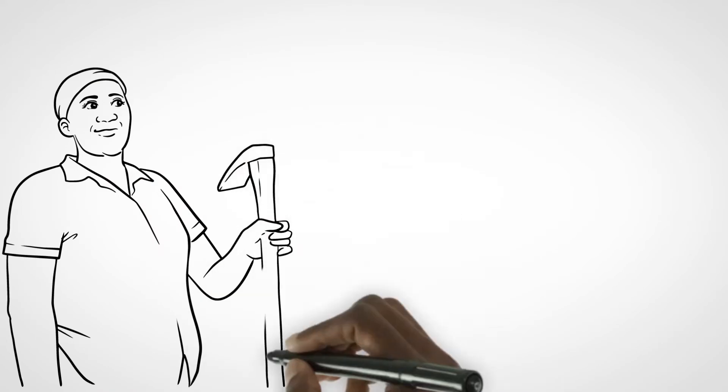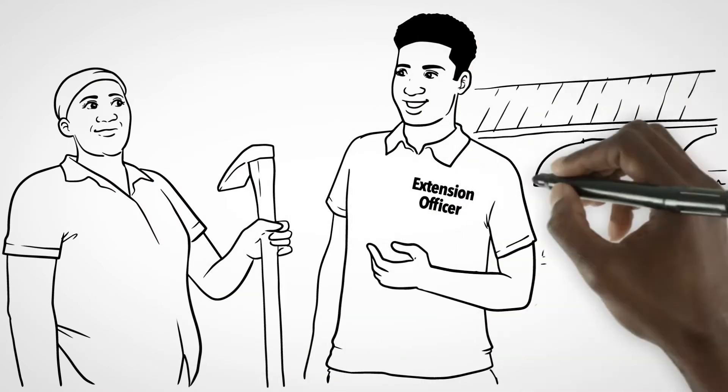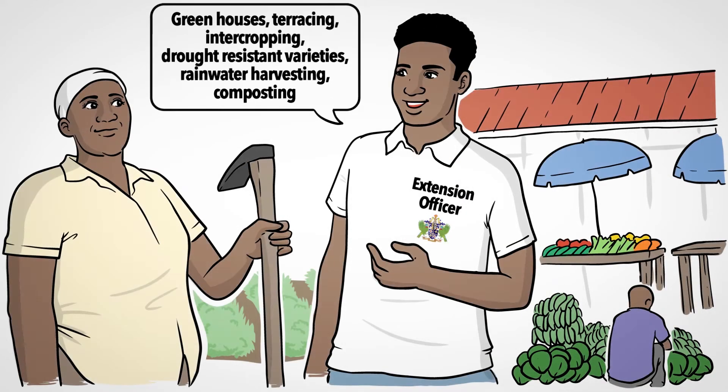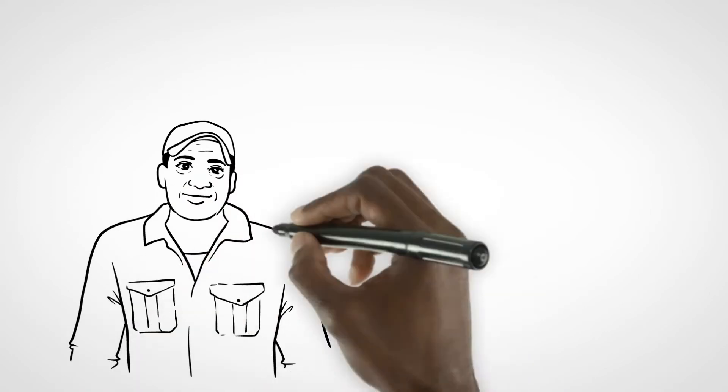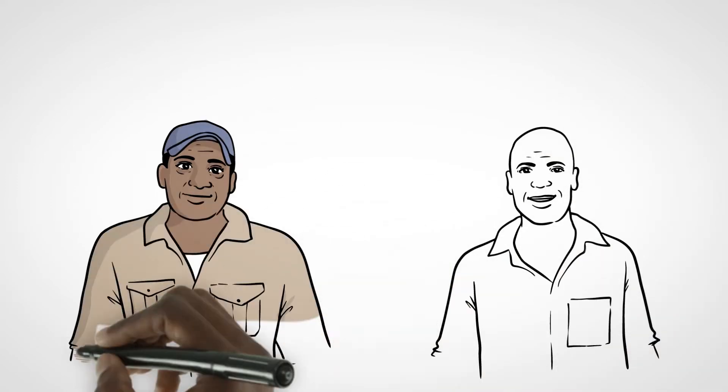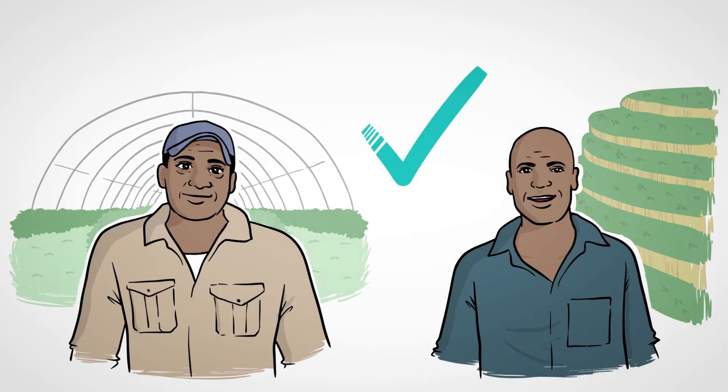But proper land use practices and policies and climate smart techniques can retain the nutrients in the soil, feed our natural water retention systems and bring new life to our food basket. New crops, new methods and a better use of our natural resources can protect our food sources from the impact of climate change.